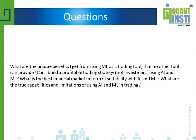I should also mention the notion of meta labeling in trading, which has been popularized recently by Dr. Lopez de Prado. The idea of meta labeling is that even if you have a very clear intuition about what to trade and what the inefficiency is, you can still use machine learning to improve the basic strategy by including other features to predict when your simple trading strategy is wrong — and try to avoid those trades. That's another way machine learning can be used: as a second layer of correction to your basic trading strategy.